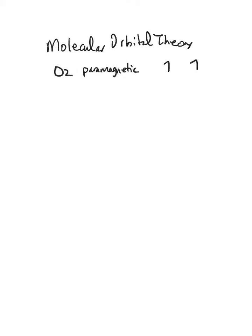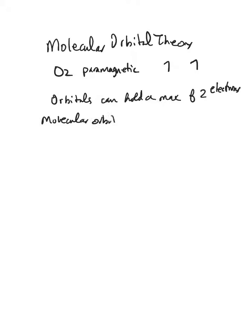We're going to build on some concepts we've used before. Orbitals can hold a maximum of two electrons. These orbitals will be a little bit different — beforehand, the orbitals were all properties of an individual atom. In molecular orbital theory, the orbitals don't belong to individual atoms. Molecular orbitals belong to the molecule as a whole.